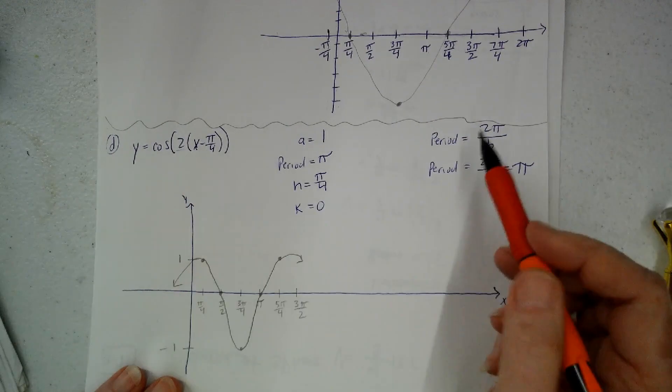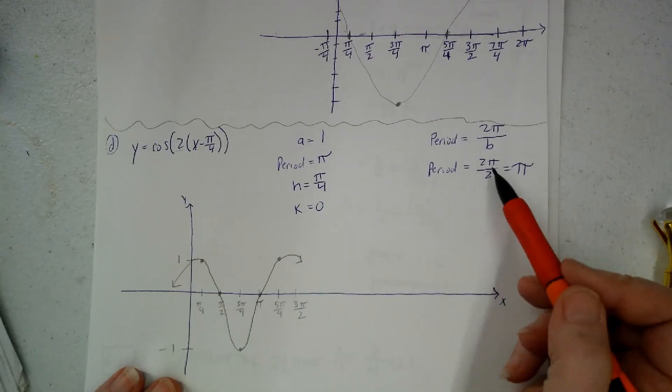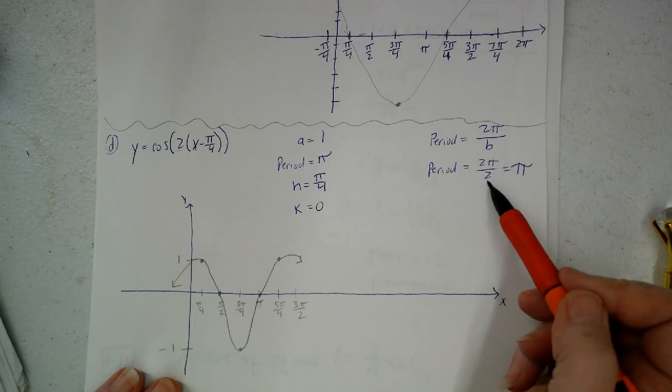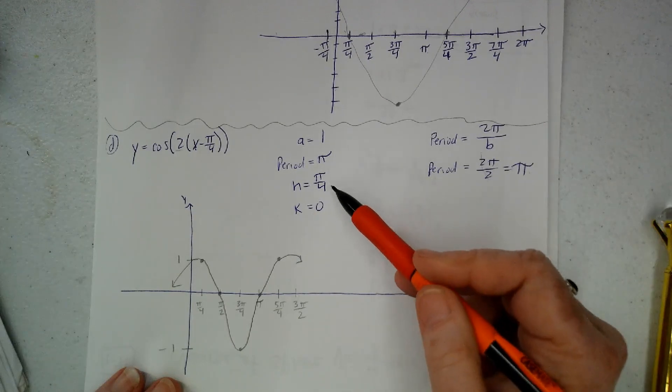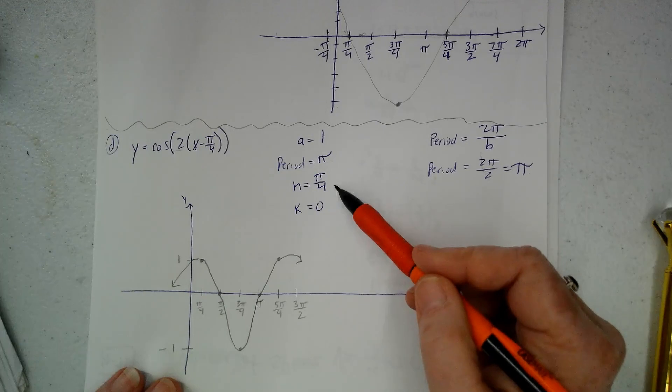B is 2, so I had to go 2π over B. So that's 2π over 2. And those cross out. So the period's π.